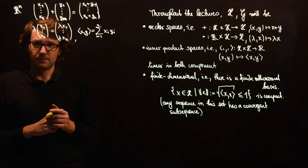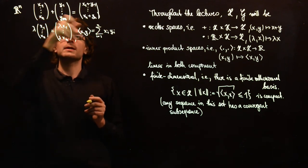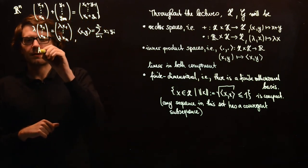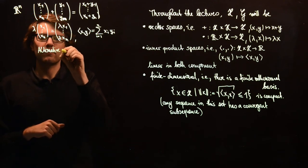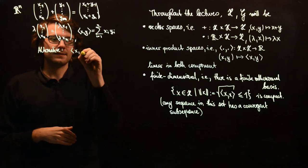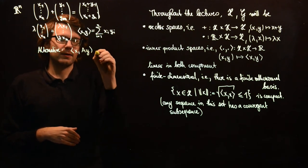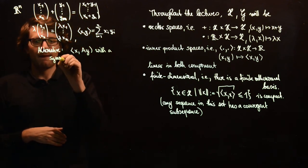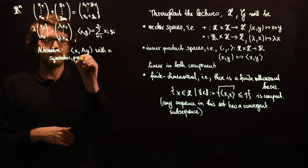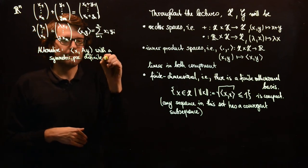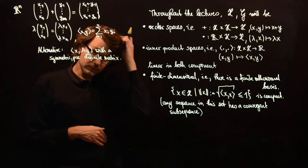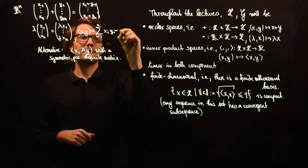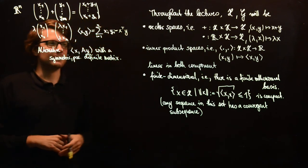But you can also put other inner products on R^n. Usually the plus and the scalar multiplications are fixed, but an alternative would be to take X transpose AY with a symmetric and positive definite matrix.